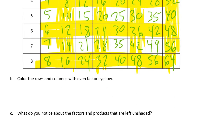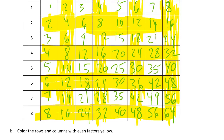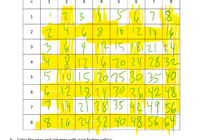The question asks: what do you notice about the factors and products that are left unshaded? I'll write the seven back in. What do you notice about the factors and products that are left unshaded? It looks to me like they are all odd numbers.